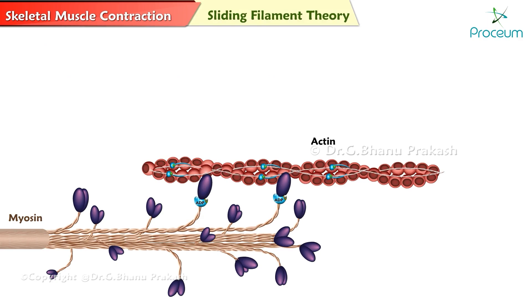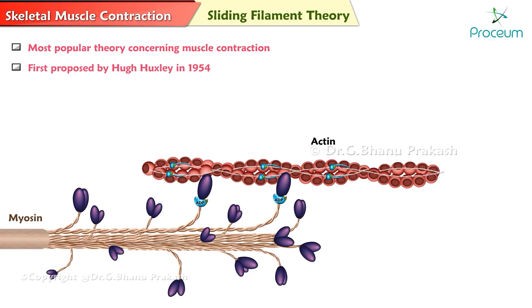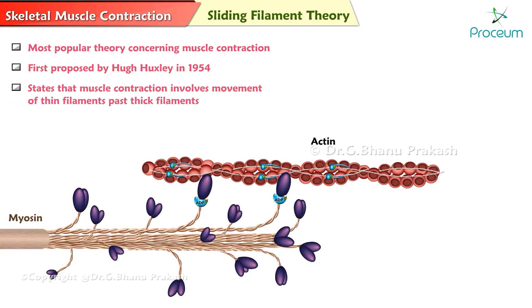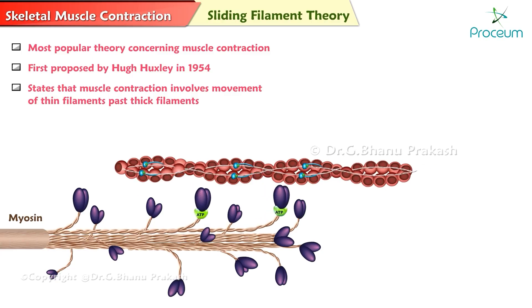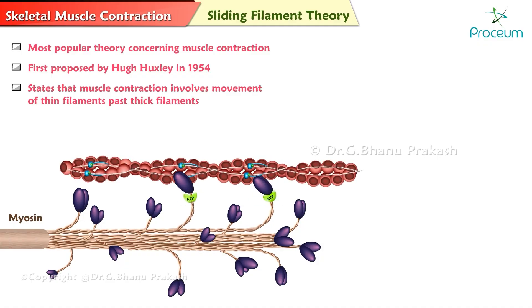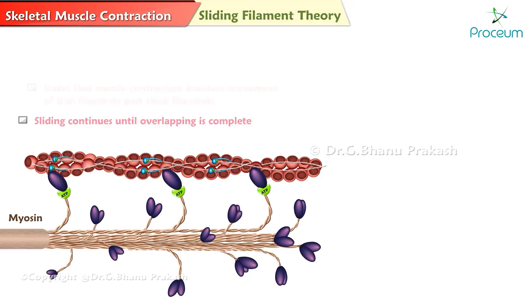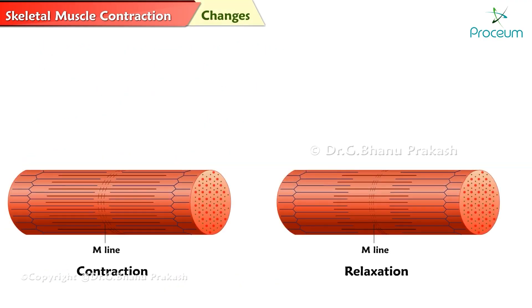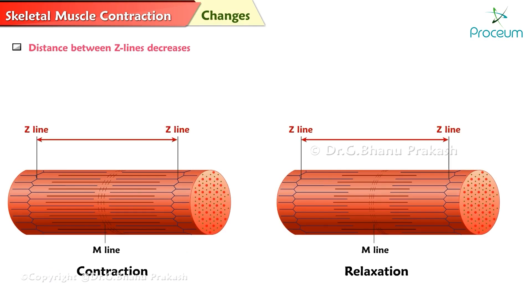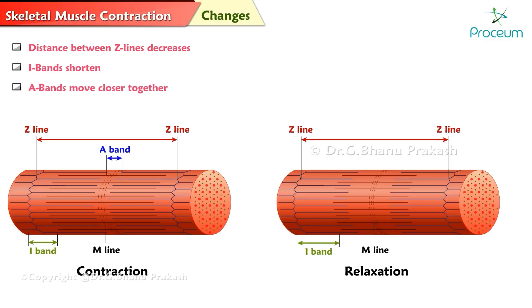Sliding filament theory is the most popular theory concerning muscle contraction. It was first proposed by Hugh Huxley in 1954. It states that muscle contraction involves the sliding movement of the thin filaments past the thick filaments, continuing until the overlapping of the thin and thick filaments is complete. The changes in muscle during contraction are: the distance between the Z-lines of the sarcomeres decreases, the I-bands shorten, and the A-bands move closer together but do not diminish in length.